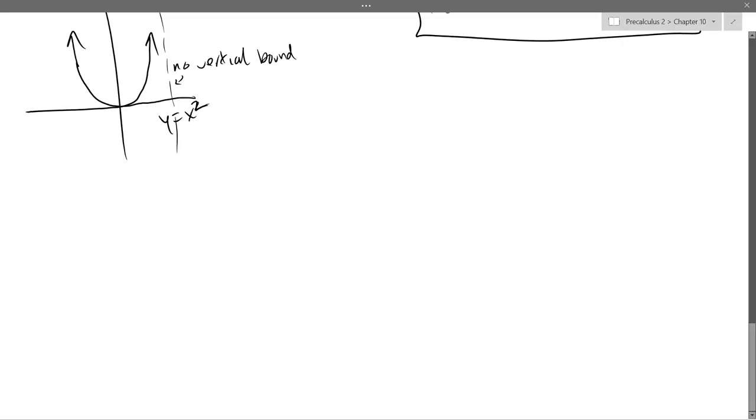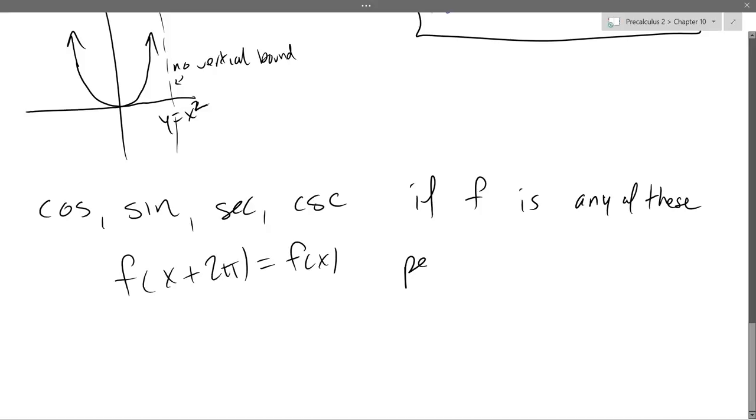Whether we're talking about cos, sine, secant, cosecant - if f is any of these four, then f(x + 2π) = f(x) because our period was 2π. Of course, if we have a horizontal stretch, that's going to change, and we saw how that changes.